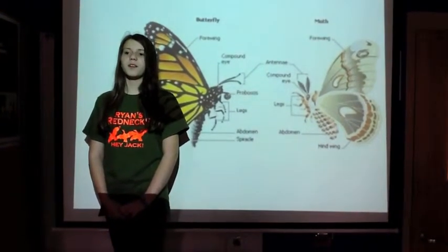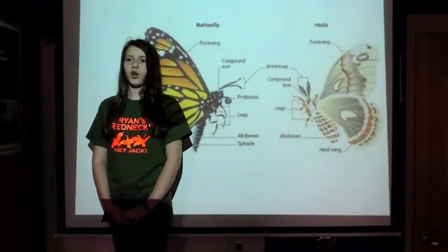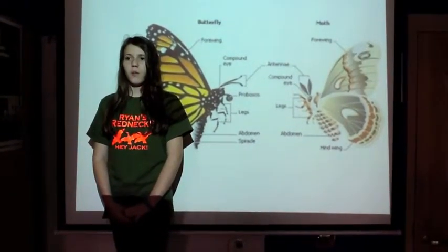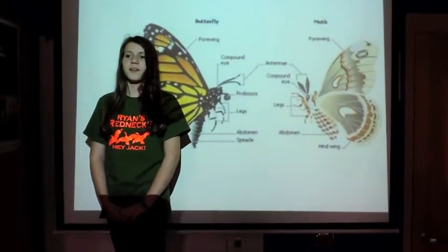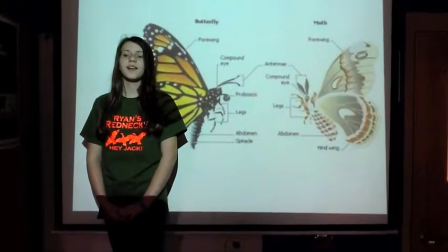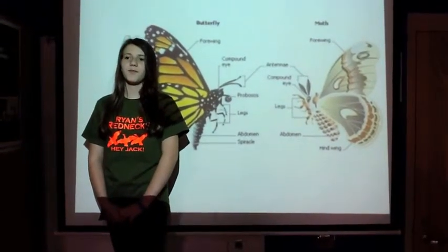Caterpillars develop into butterflies in a hard chrysalis. Moths develop in a cocoon that they spin out of silk and sometimes leaves.